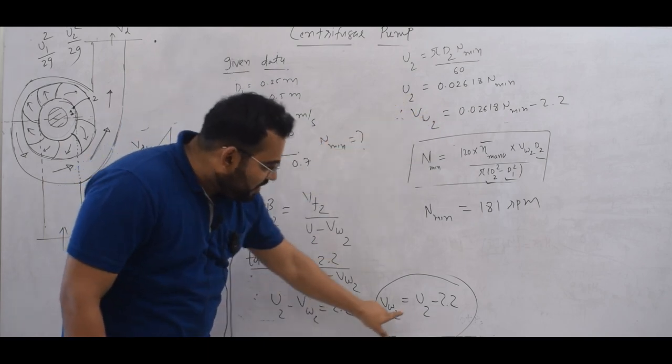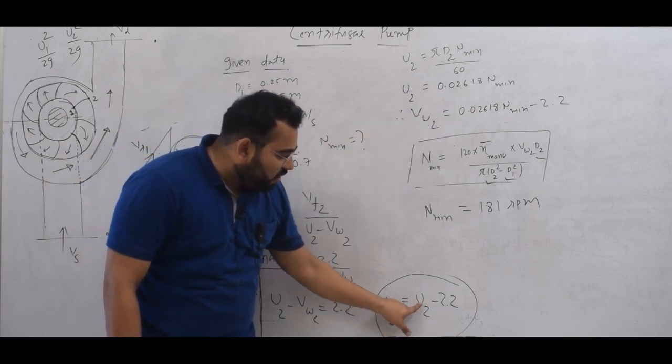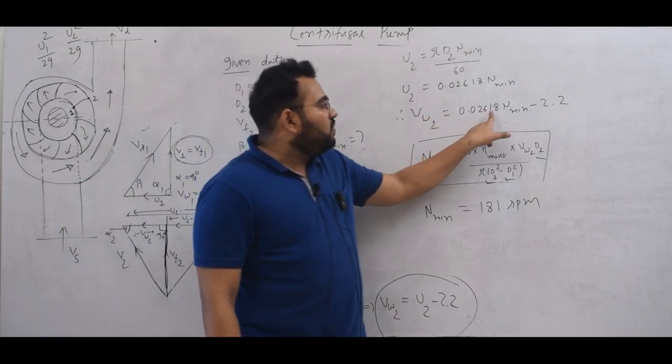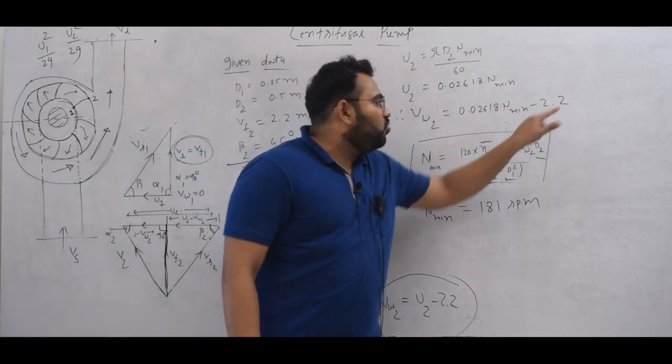So U2 value is here. VW2 equals U2 minus 2.2. So VW2 will be 0.02618 N minimum minus 2.2.